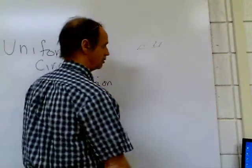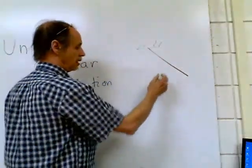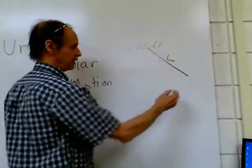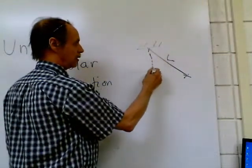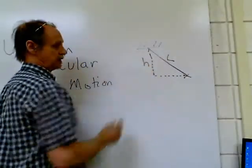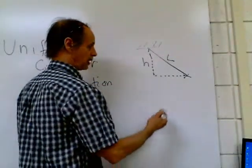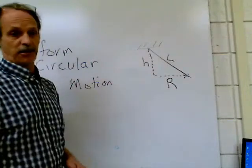There's the ceiling. Here's the length L of the string. Here's the airplane. Here's the height h you measured from the ceiling with the airplane in motion. Here's the radius of the circle that the airplane is moving in.